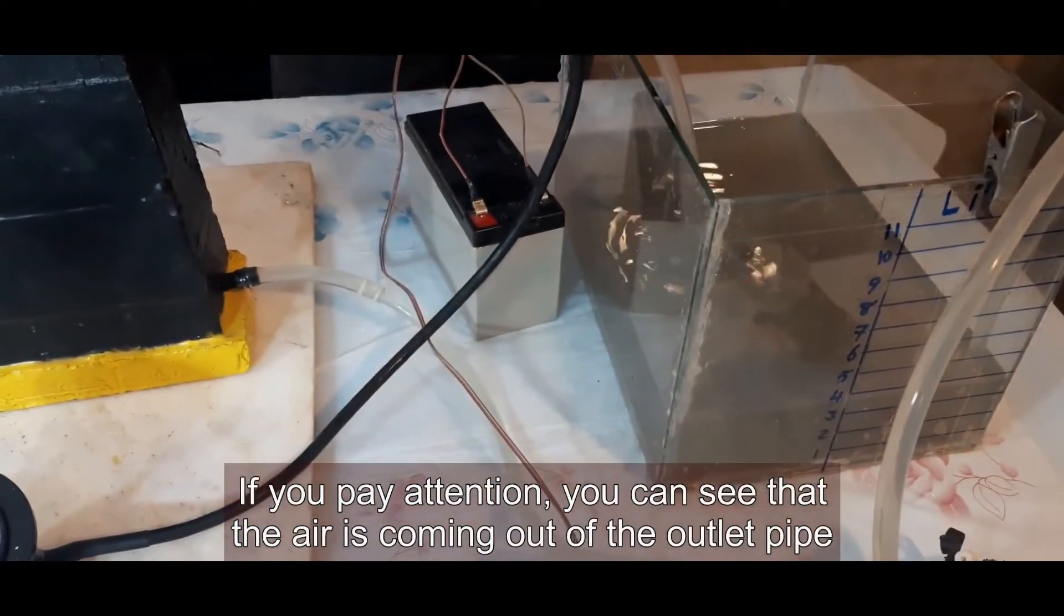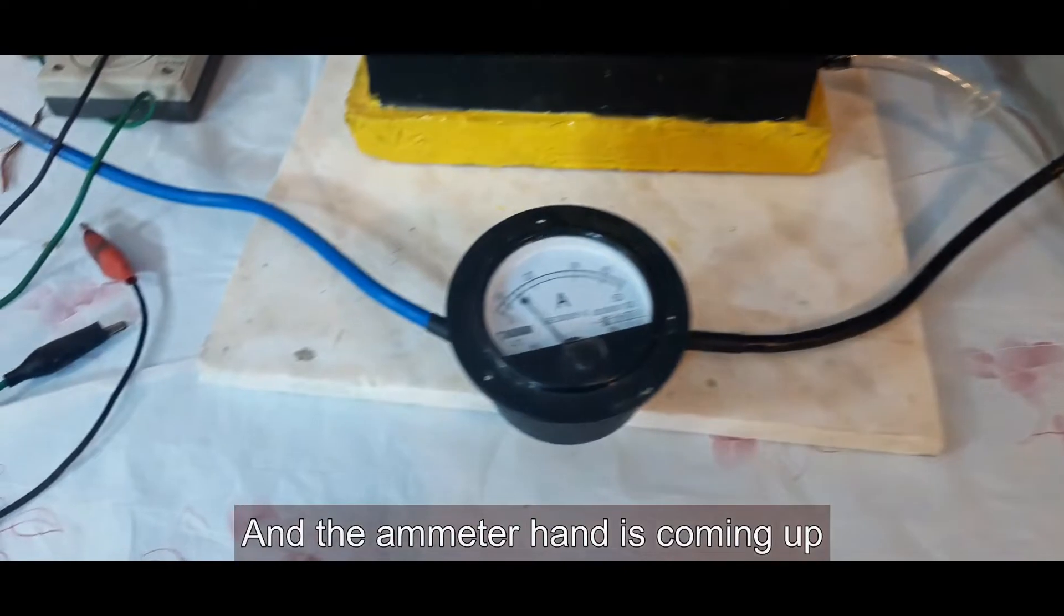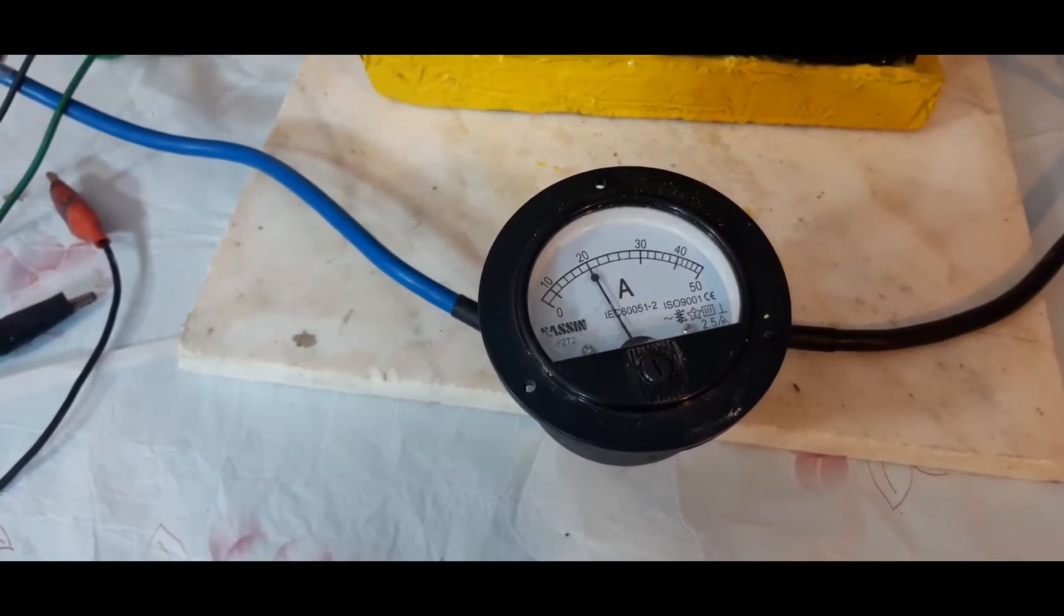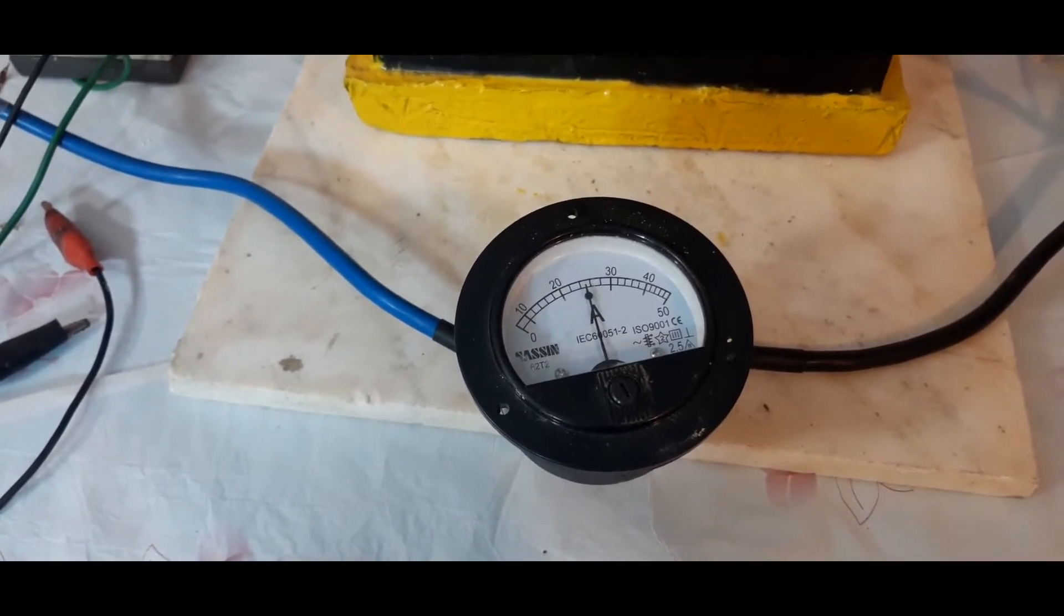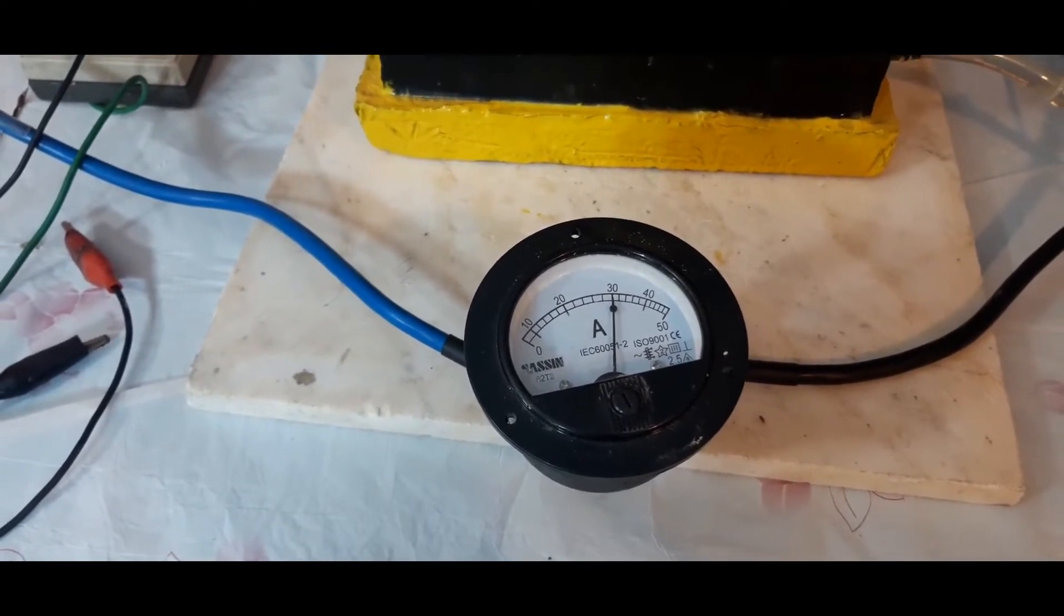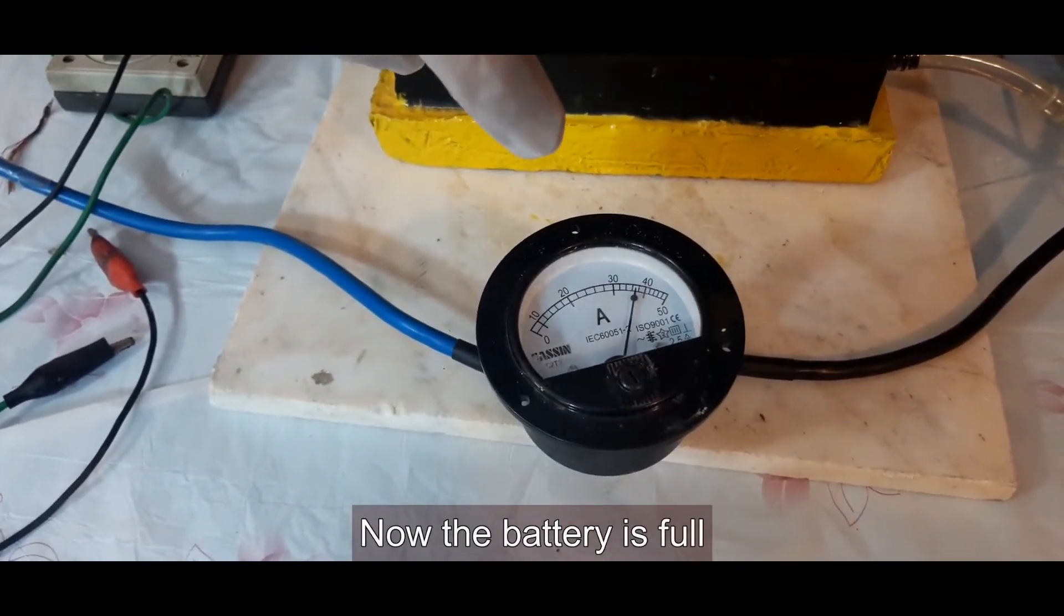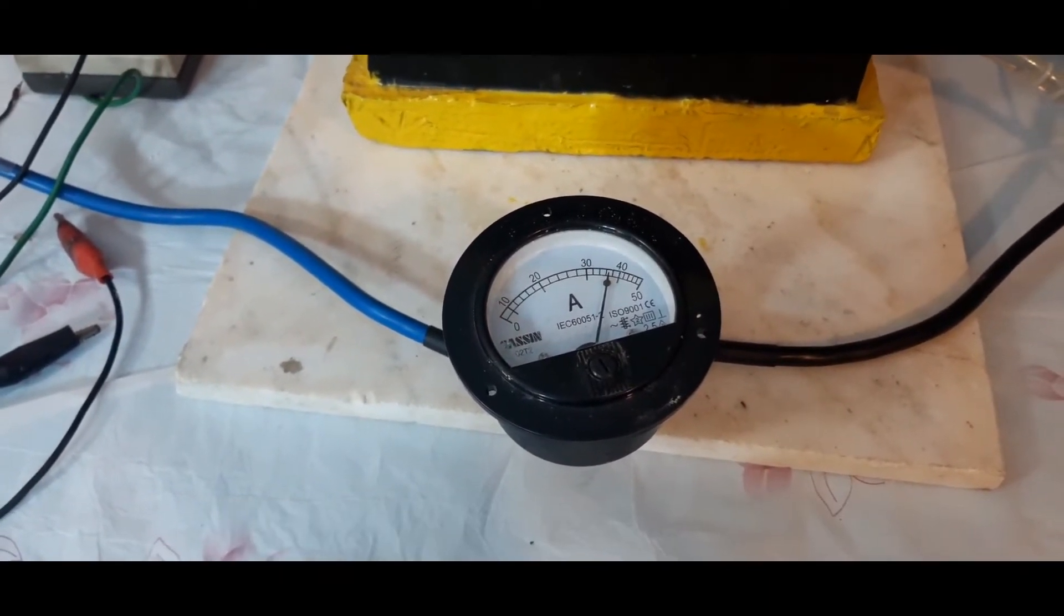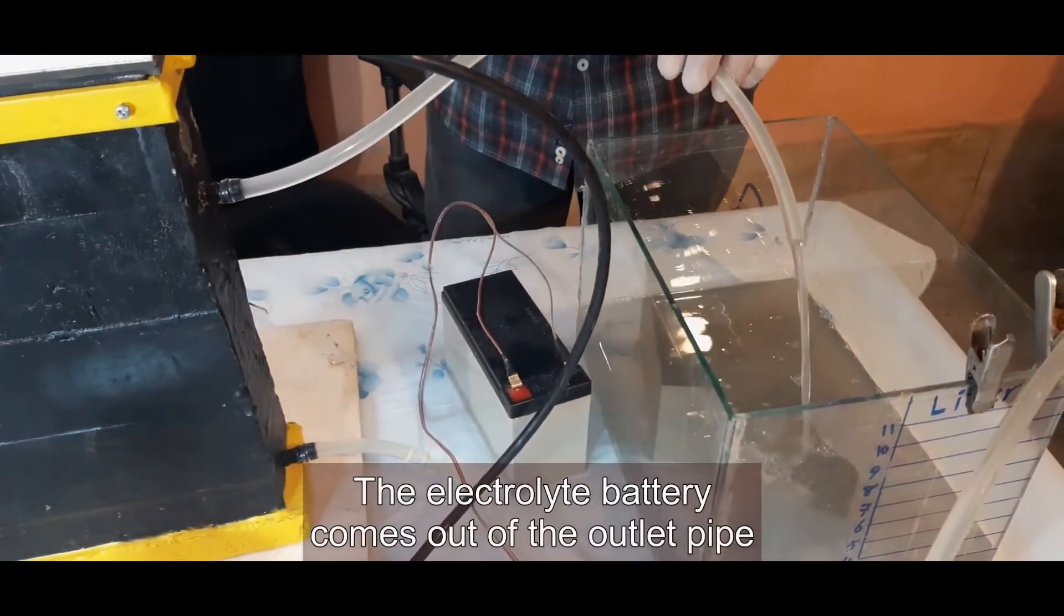If you pay attention, you can see that the air is coming out of the outlet pipe and the ammeter hand is coming up. Now, the battery is full and the current is close to 38 amperes. The electrolyte comes out of the outlet pipe.